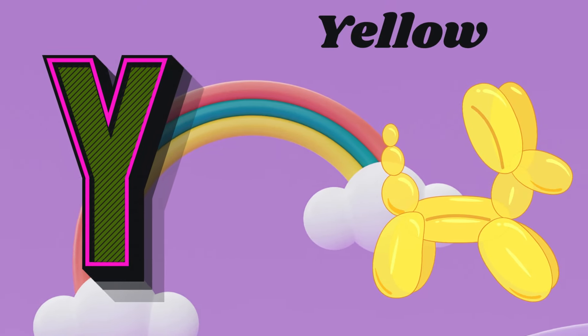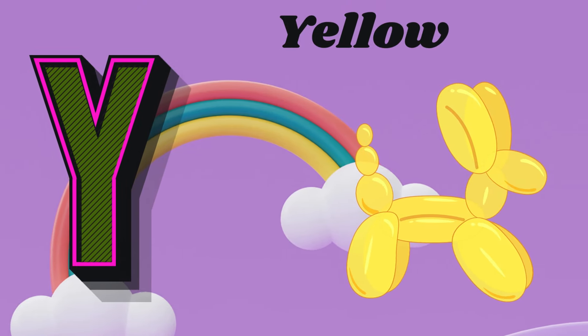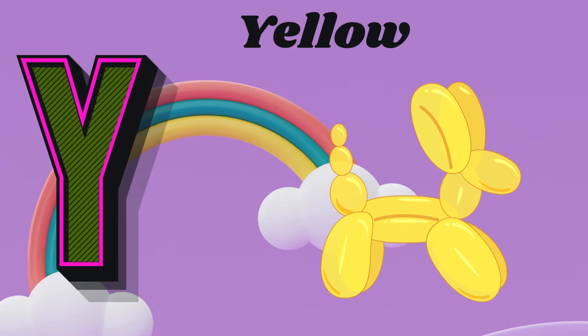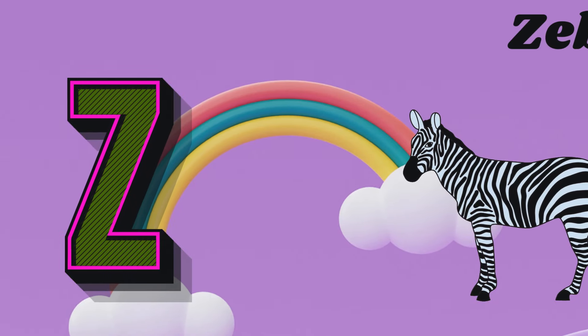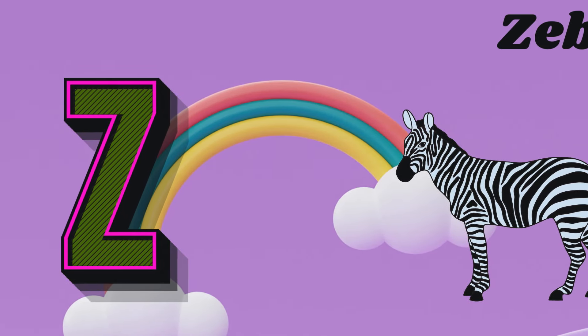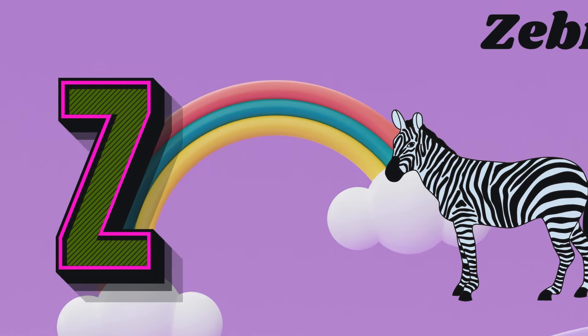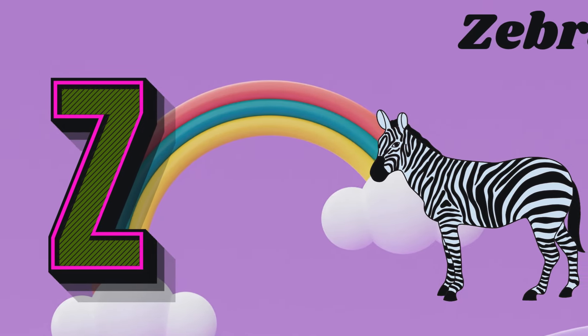Y is for yellow, y, y, yellow. Z is for zebra, z, z, zebra.